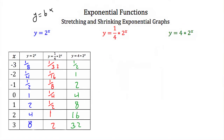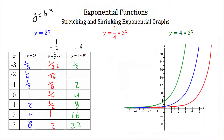Notice that for y is equal to 4 times 2 to the x, these values are all our original values multiplied by 4. And for y is equal to 1 fourth times 2 to the x, these are all our original values multiplied by 1 fourth. So let's look at the graphs of these three functions. If we go to our parent function y is equal to 2 to the x and pull an x value of 2, our y value is 4. For y is equal to 1 fourth times 2 to the x at x equals 2, the y value is 1. And for y is equal to 4 times 2 to the x at x equals 2, our y value is 16. So by multiplying our parent function by an a, we're either shrinking or expanding the graph vertically.